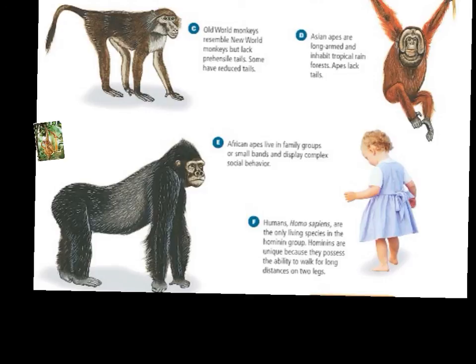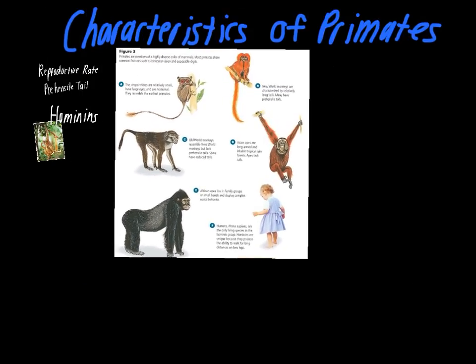The last group are humans. Our scientific name is Homo sapiens — the only living species from the hominin group — and we're the only ones that possess the ability to walk on two legs for long distances. While chimps and some other monkeys will walk on two legs for short periods, humans exclusively walk on two limbs for long periods. Keep these characteristics in mind as we work through this chapter and compile evidence for where modern people have come from.